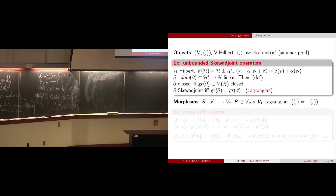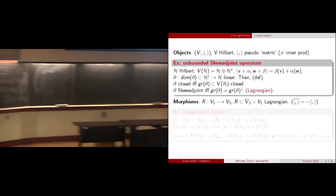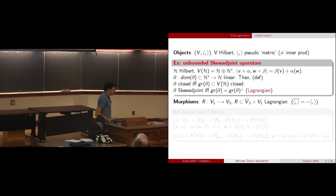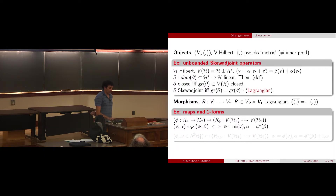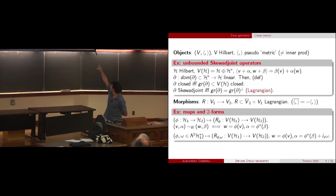Morphisms will be in the same spirit as Alan's talk and David's talk. We consider Lagrangian relations, but now the pseudo-metric is symmetric, not skew. Of course, maps become morphisms in this double construction, but there are others. For example, you can twist the natural relation given by a map by a two-form.